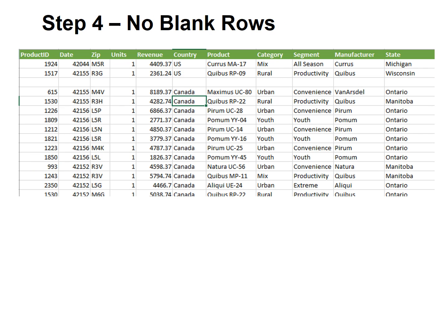It will automatically put all your headers in the first row and all your data going down, exactly the way we want. Step 4: no blank rows. A lot of times we use a blank row to separate data, but Excel sees that as the end of the database, so you don't want a blank row.